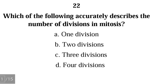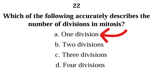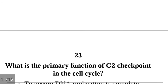Question 22: Which of the following accurately describes the number of divisions in mitosis? A) one division, B) two divisions, C) three divisions, D) four divisions. The correct answer is A) one division — mitosis is just a single cell division.